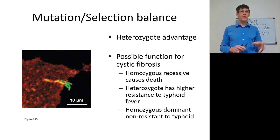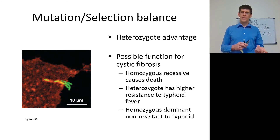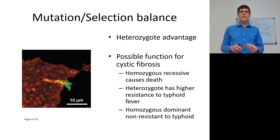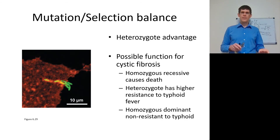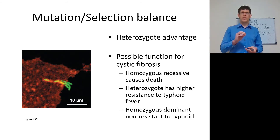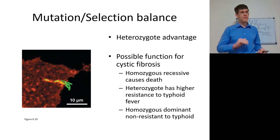Cystic fibrosis is a cause of death when you have two alleles for it. If you're homozygous recessive, you die. Homozygous dominant, however, has a chance of getting typhoid, which was very common in Caucasians because Europeans lived in cities without good sanitation — typhoid fever was a common cause of death. But why does cystic fibrosis persist if it's lethal? It turns out the heterozygote has higher resistance to typhoid fever. The mutation in the protein that causes cystic fibrosis also makes it harder for the typhoid bacterium — Salmonella typhi — to attach to the cell.